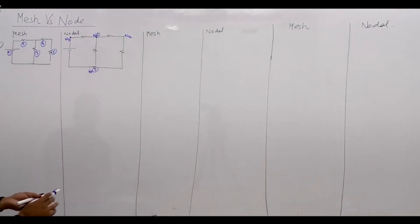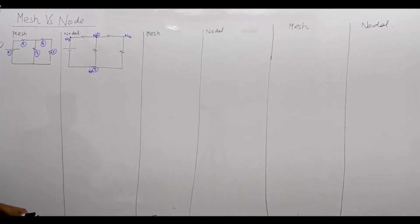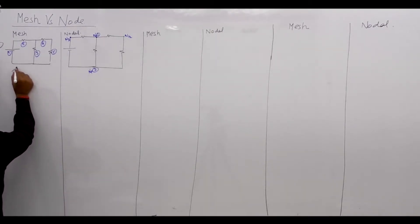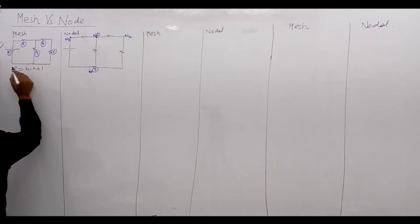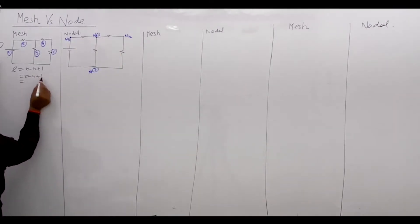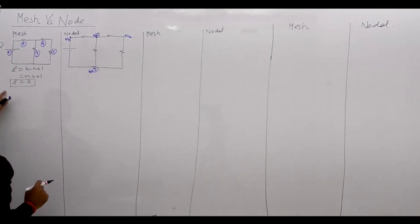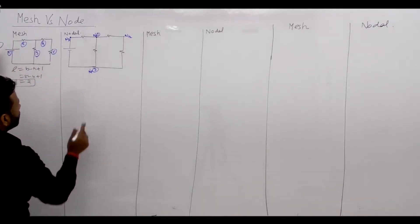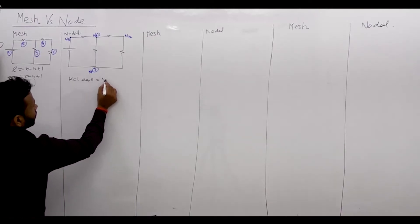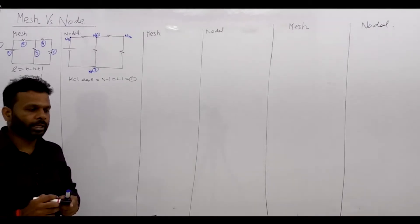Let's start and see the differences between mesh and nodal, because this will definitely come in a complete exam. The number of mesh equations is L = B − N + 1. Here B = 5 branches and N = 4 nodes, giving L = 5 − 4 + 1 = 2 mesh equations. For nodal analysis, the number of node equations is N − 1 = 2 − 1 = 1. So depending on the question, we choose whichever method takes less time.